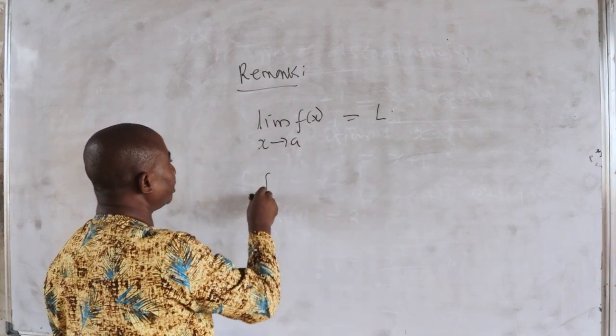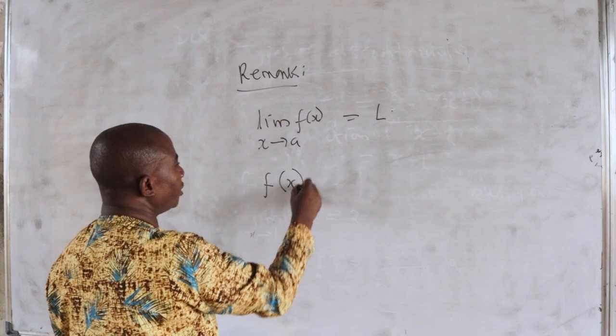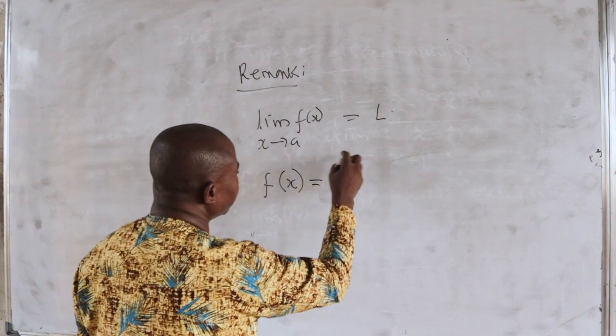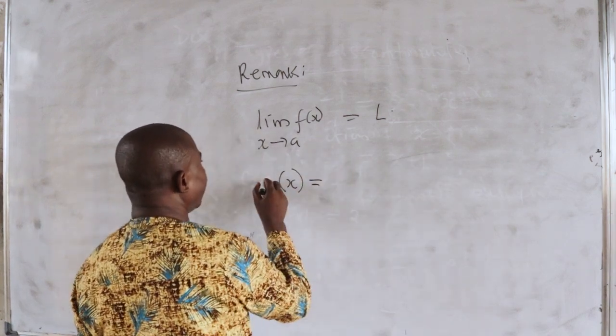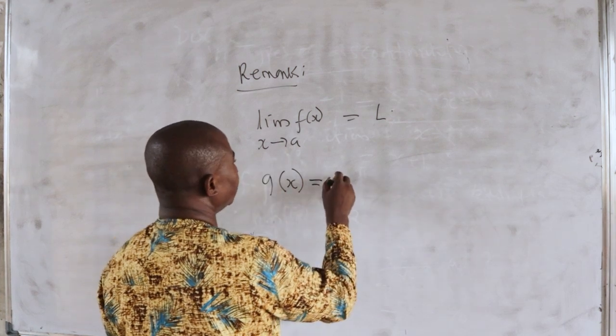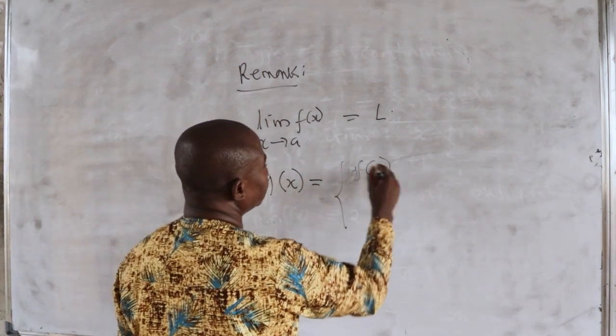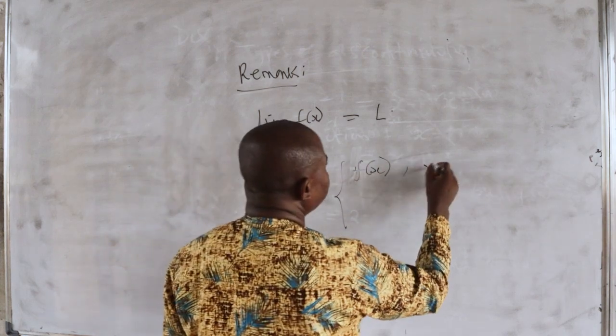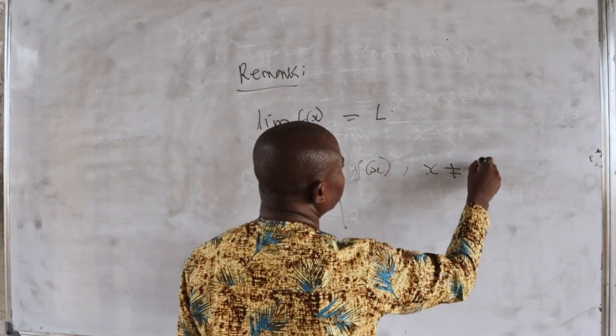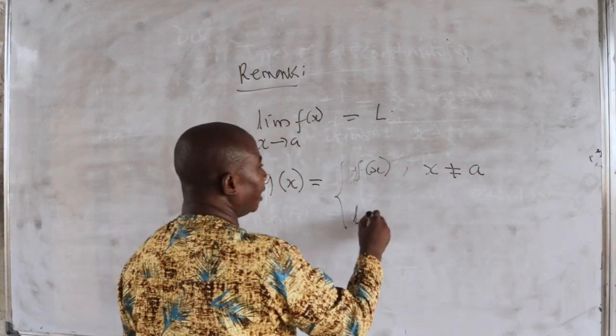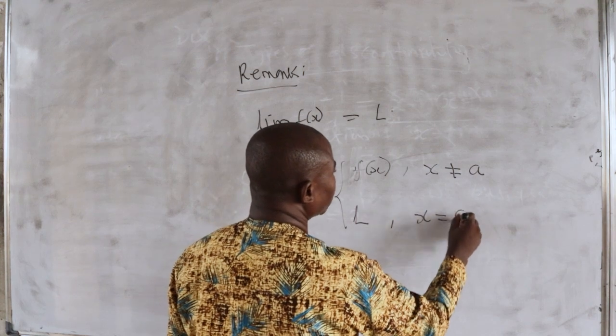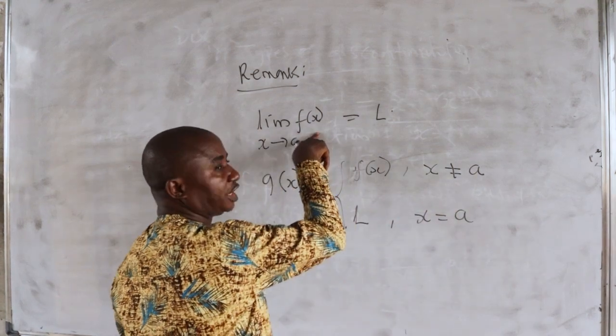We simply redefine the function. Let me call it a new function here. g(x) is equal to f(x) anytime x is not equal to a, and then it is L when x is equal to a, where L is this limit.